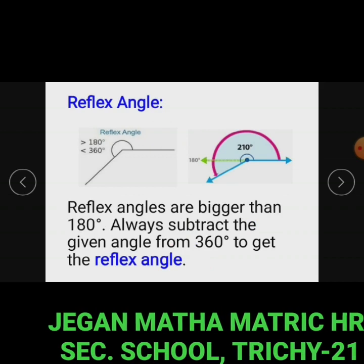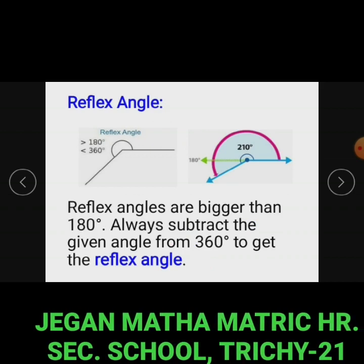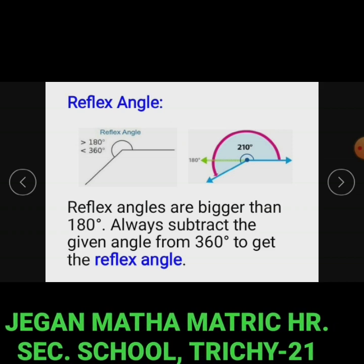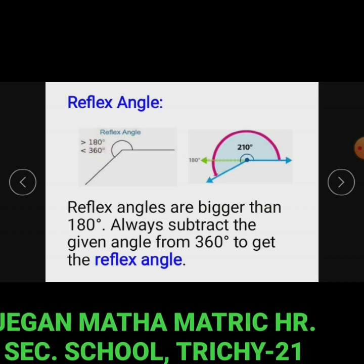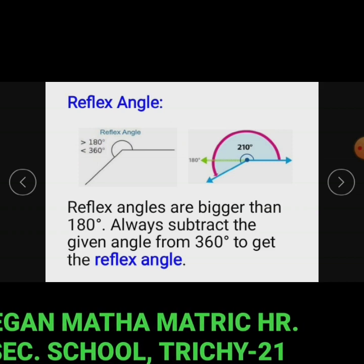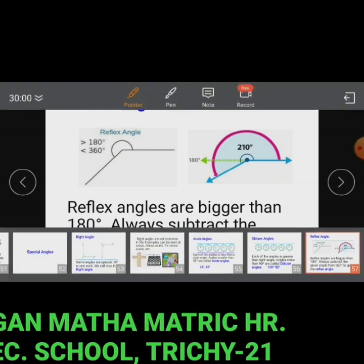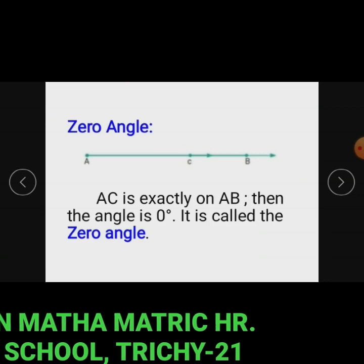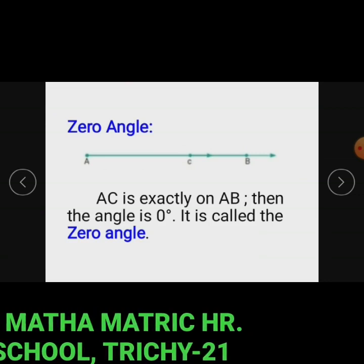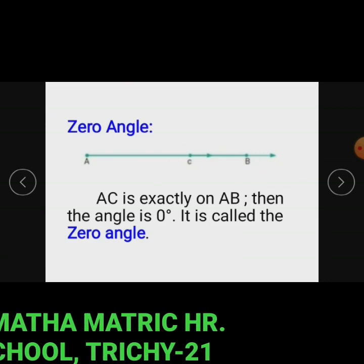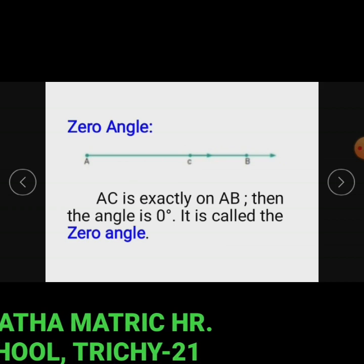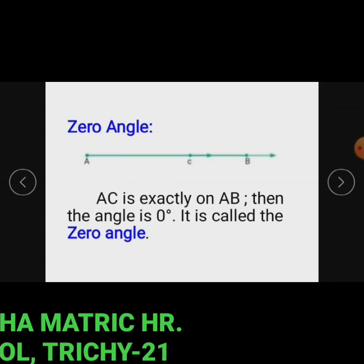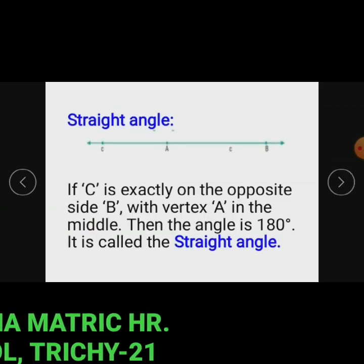Reflex angles are bigger than 180 degrees. Subtract the given angle from 360 degrees to get the reflex angle. So a reflex angle is greater than 180 and less than 360 degrees — for example, 210 degrees is a reflex angle. Zero angle: in this figure, ray AC is exactly on AB, so the angle is 0 degrees, called the zero angle.